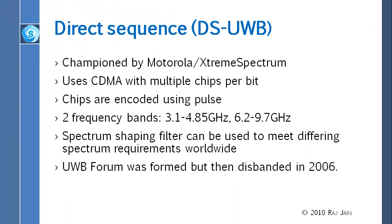The first group is DS-UWB, which is the purest approach. What they wanted to do was use CDMA — multiple chips per bit. For each bit, they send 10 chips, which is direct-sequence CDMA. Then they do the UWB using pulses — this is DS-UWB. When the FCC allocated the spectrum, they divided it into two bands: 3.1 to 4.85 GHz and 6.2 to 9.7 GHz. The DS-UWB group started using these two different bands.